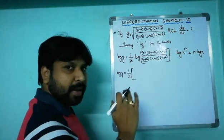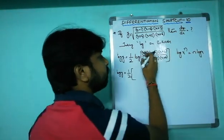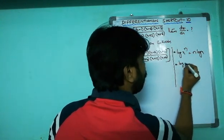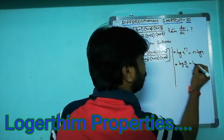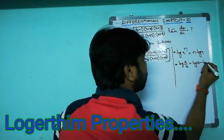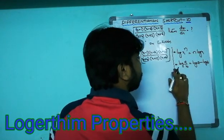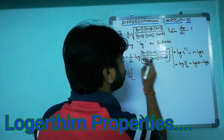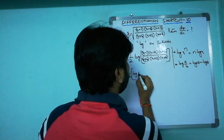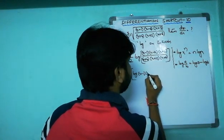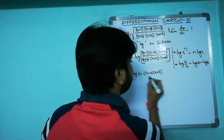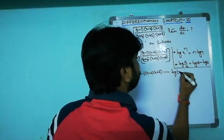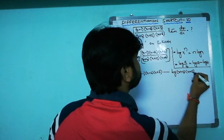Now simplify using the formula log(a/b) = log a − log b. So log y = (1/2) · [log((x−1)(x−2)(x+3)) − log((x+4)(x+5)(x+6))].